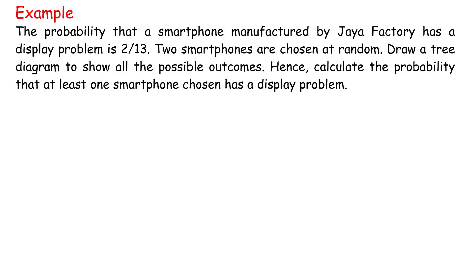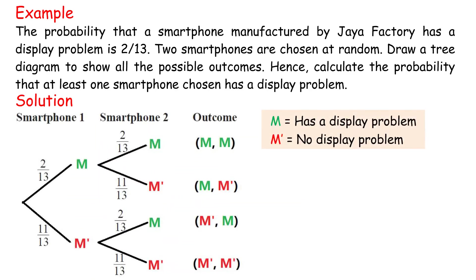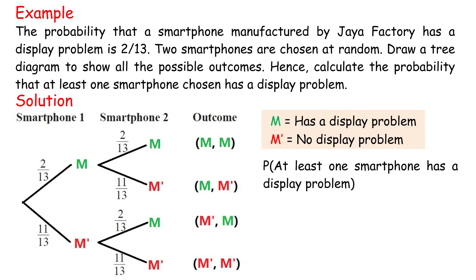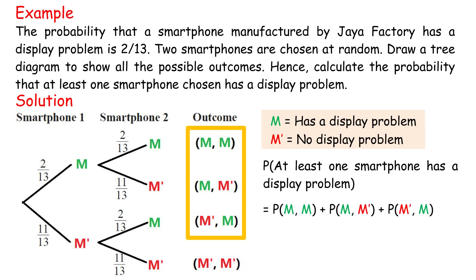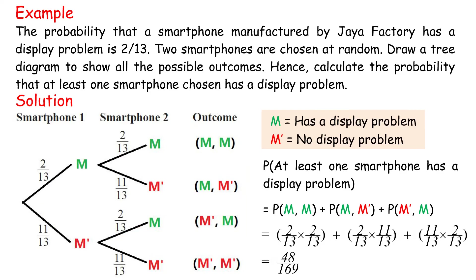Example: The probability that a smartphone manufactured by J-Goff Factory has a display problem is 2 over 13. Two smartphones are chosen at random. Draw a tree diagram to show all the possible outcomes. Hence, calculate the probability that at least one smartphone chosen has a display problem. Let M equals has a display problem and not M equals no display problem. P(at least one smartphone has a display problem) equals P(MM) plus P(M, not M) plus P(not M, M) equals 2 over 13 times 2 over 13 plus 2 over 13 times 11 over 13 plus 11 over 13 times 2 over 13 equals 48 over 169.